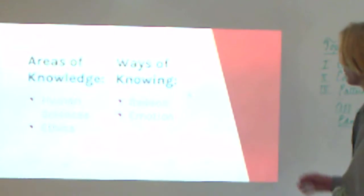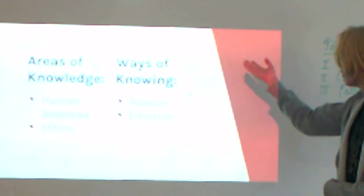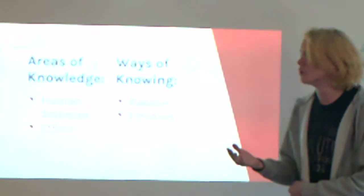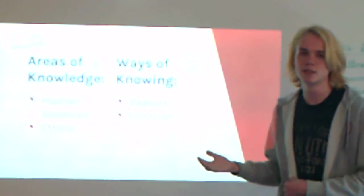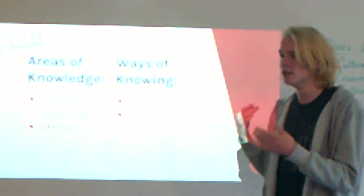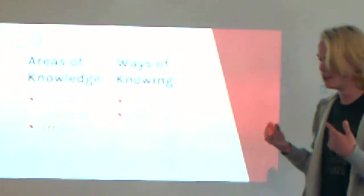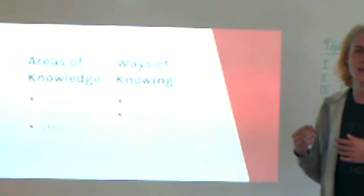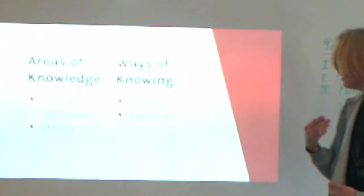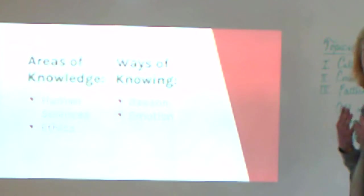These are my areas of knowledge, human science and ethics. These are my ways of knowing, reason and emotion. So human science is the study of human behavior. And ethics is the study of what is right and what is wrong. Reason is our reasoning, what we come to with logic. And emotion is our own feelings, personal feelings.